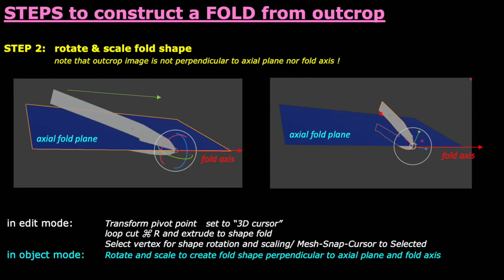Once we have approximated the fold shape, we will execute the projection along the fold axis onto the cross section perpendicular to the axial fold plane by rotating the fold image along the three coordinates and scaling it and extrude the cross section along the fold axis into a 3D body.